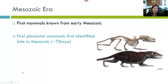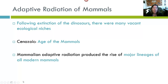The first mammals are known not from the Cenozoic, but from the Mesozoic Era. The first placental mammals were identified in the late Mesozoic, 70 million years ago. Following the extinction of the dinosaurs, there were many vacant ecological niches open for the rapid expansion and diversification of mammals. The Cenozoic was an opportunistic time for mammals, and as a result it is known as the age of the mammals.